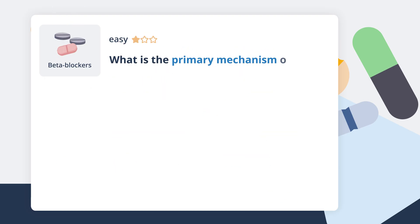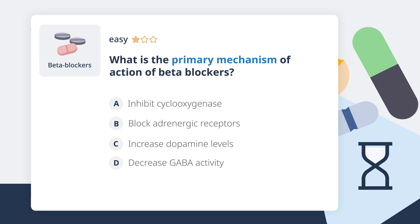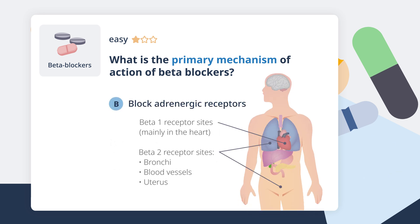What is the primary mechanism of action of beta blockers? These are beta adrenergic blockers — just another way of saying beta blocker. Beta receptors are in the adrenergic receptor family, so that's why we call them beta adrenergic blockers or beta blockers.